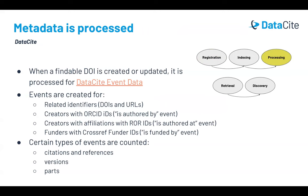Event Data is a joint service by Datasite and CrossRef to collect and expose links to DOIs. For Datasite DOIs, events are created for the related identifier property, for creators with ORCID IDs, for creators with affiliations as ROR IDs, and for funders with CrossRef Funder IDs. In addition, some types of events are counted: we count citations of a DOI and references to other DOIs, versions from the has version and is version of relation types, and parts from has part and is part of. These counts are available through the REST API, and citations and references are also visible through Datasite Commons, our discovery interface.